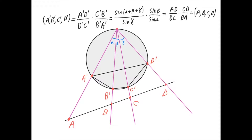And so we get this series of equalities, which proves that the cross ratio of the points a, b, c, and d lying on a straight line can be projected onto a circle and it would equal the cross ratio of the corresponding points a prime, b prime, c prime, and d prime on that circle. The only condition is that the point through which we are projecting also lies on that circle. Otherwise, this series of equalities wouldn't hold.